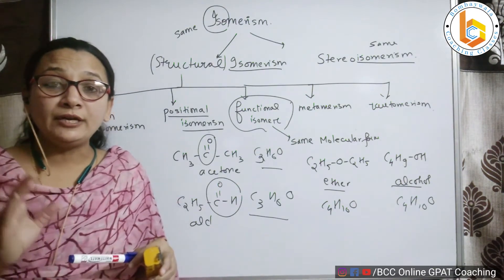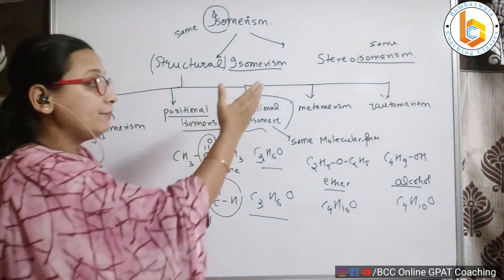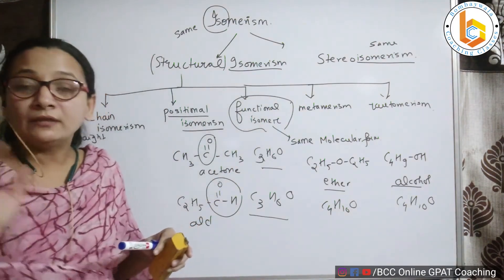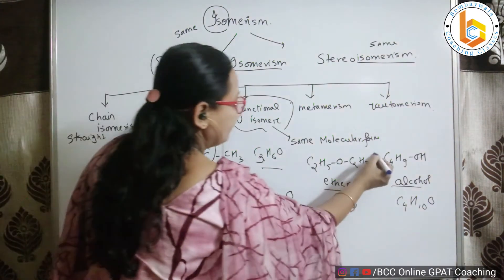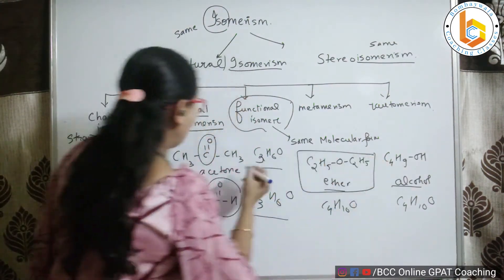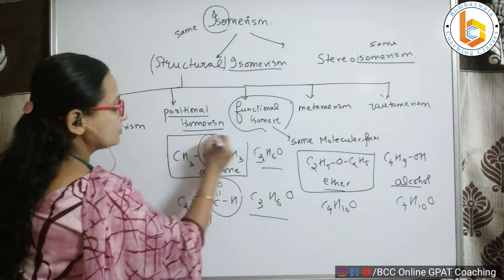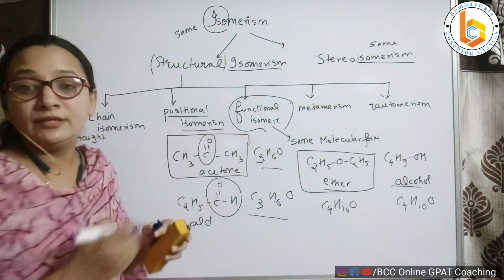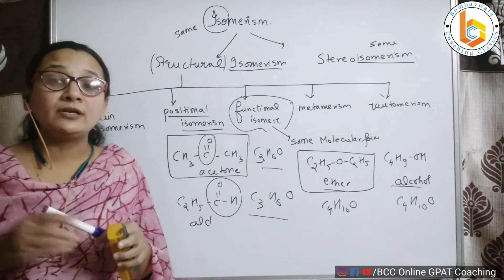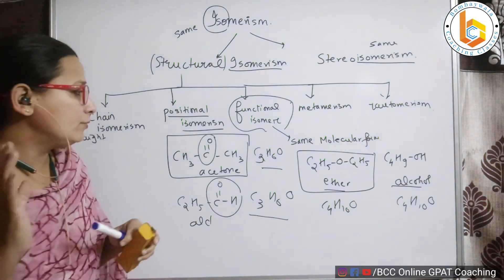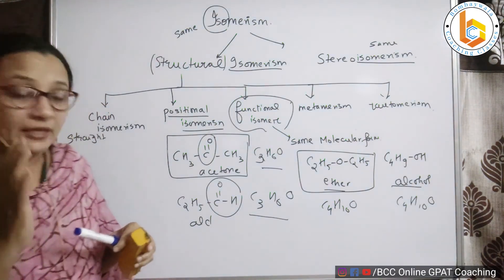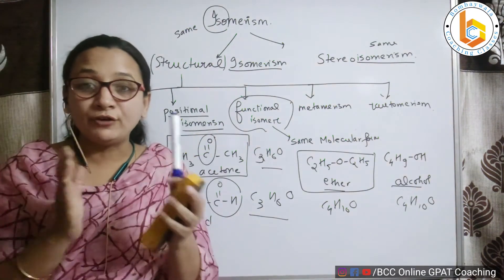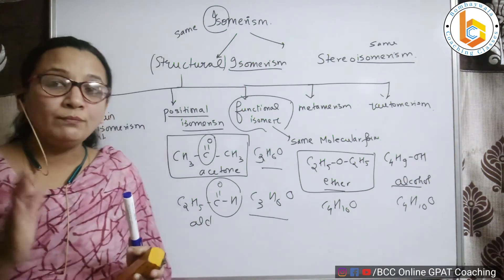My dear students, we should not get confused with functional isomers and metamerism, because this is also shown by compounds like ether and ketone only. Because both these examples, these functional groups match, students get confused. Don't get confused. Now what do you mean by metamerism?